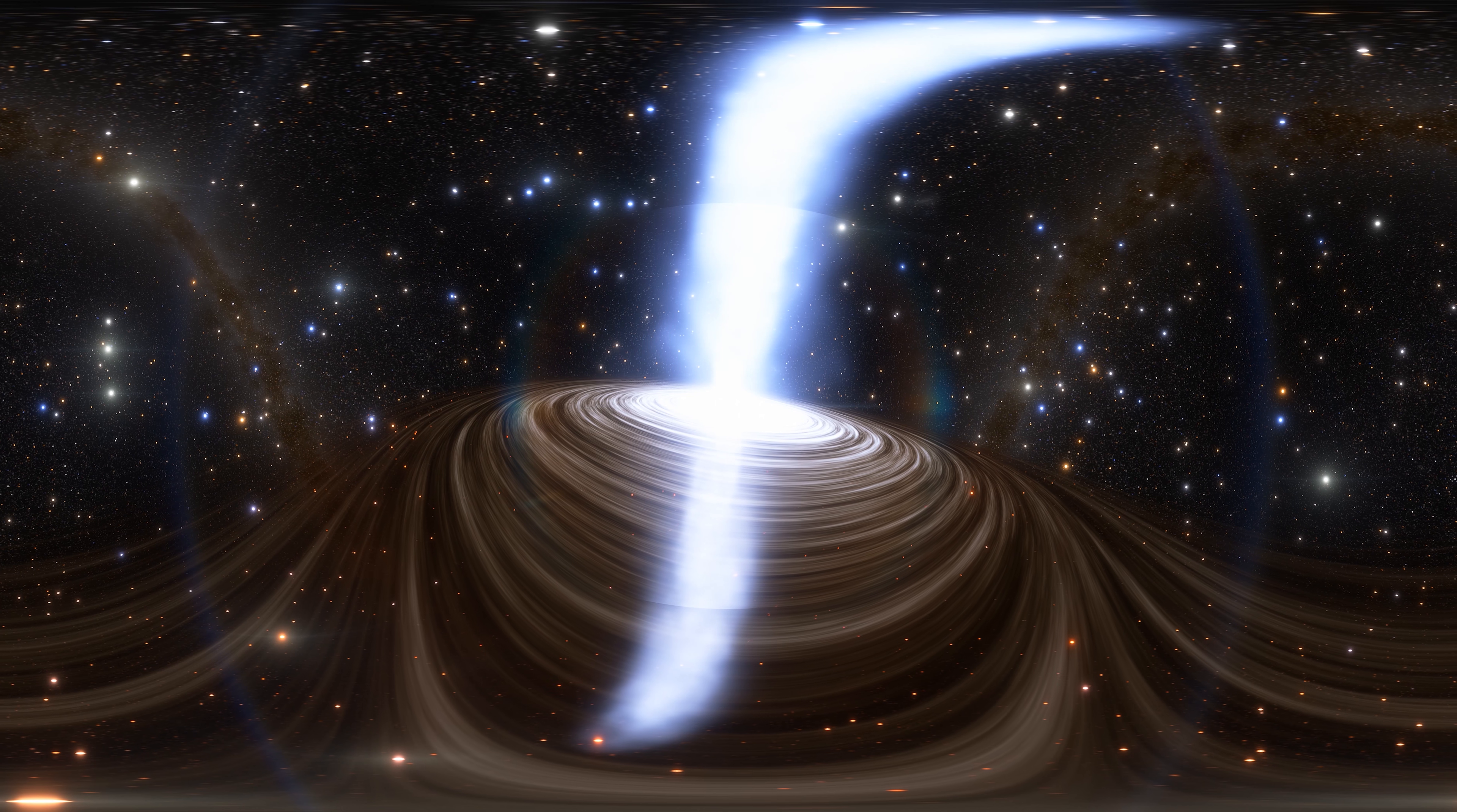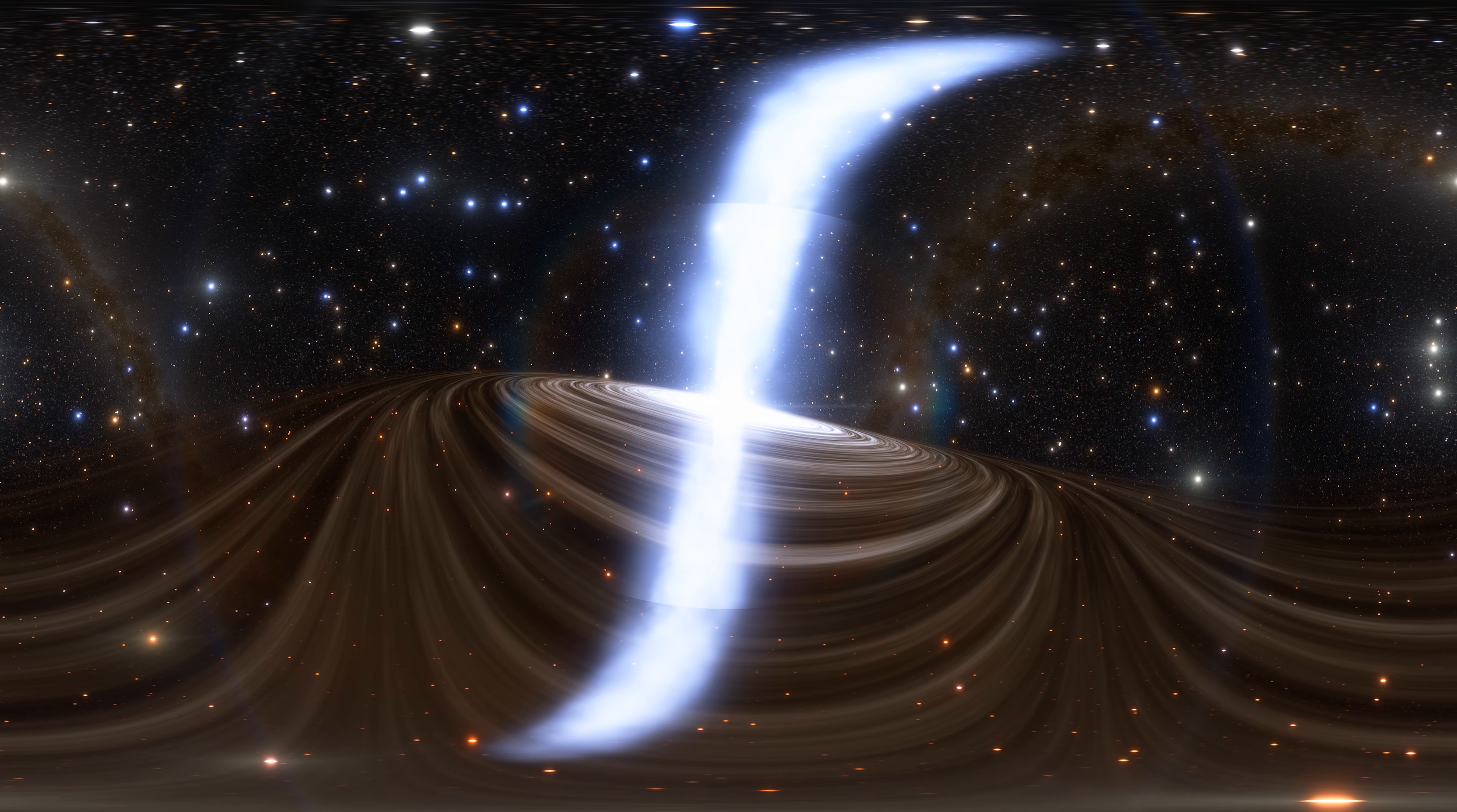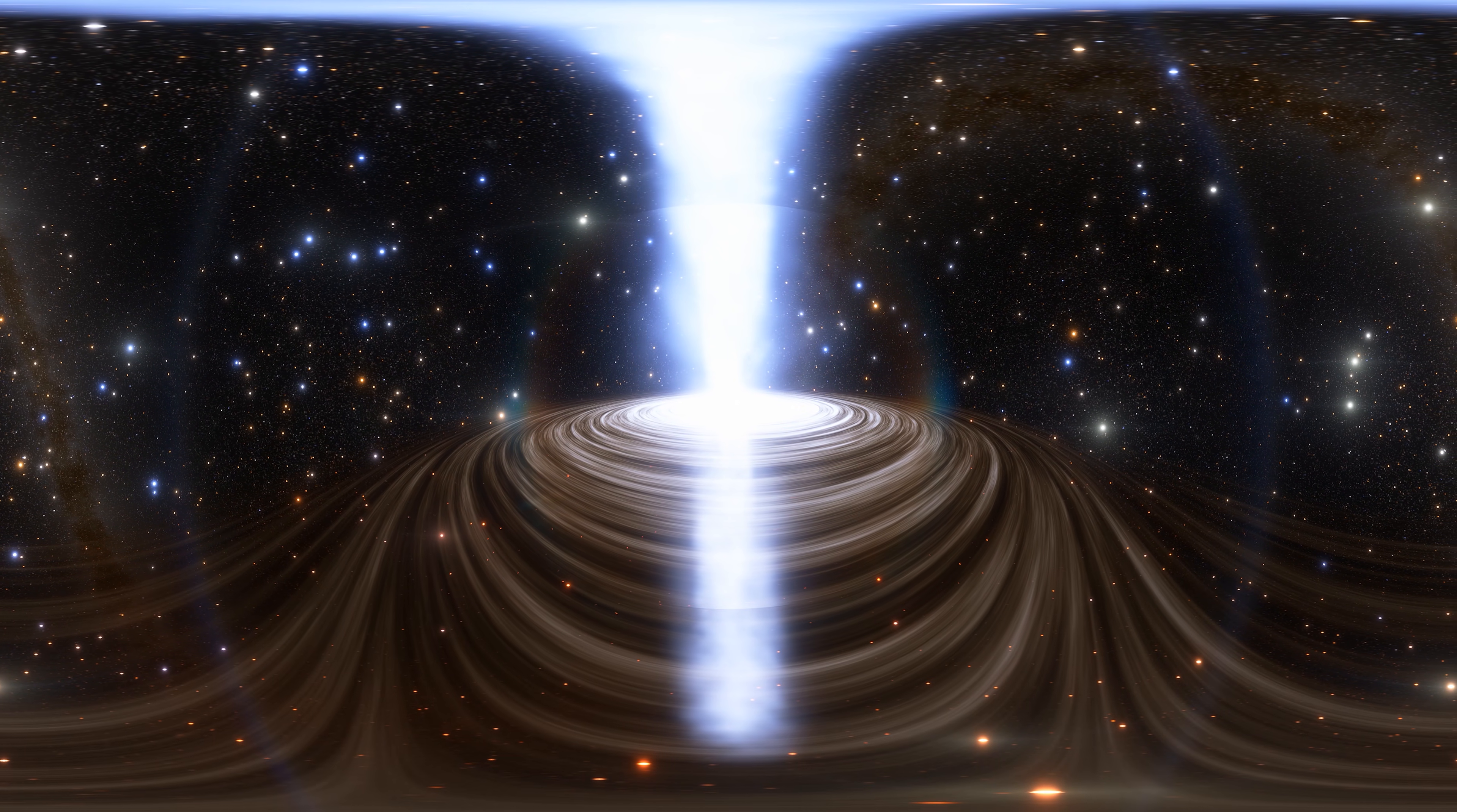Sagittarius A is a supermassive black hole placed in the center of the Milky Way. The current value of its mass is about 4 million solar masses. The distance from Earth to Sagittarius A is about 26,000 light years.